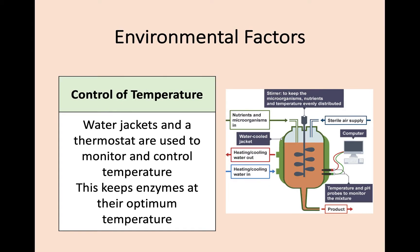Water jackets and a thermostat are used to both monitor and control the temperature of the growth process. The main need to maintain temperature is to keep enzymes at their optimum temperature. If temperature gets too high, the enzymes will denature and the process will stop; too low and the reactions will be too slow. So it's important that temperature is kept at its optimum level.